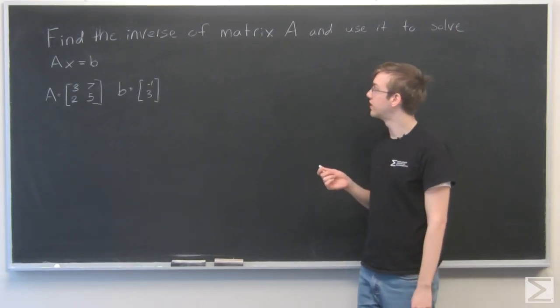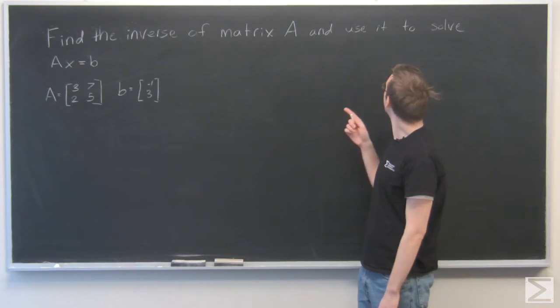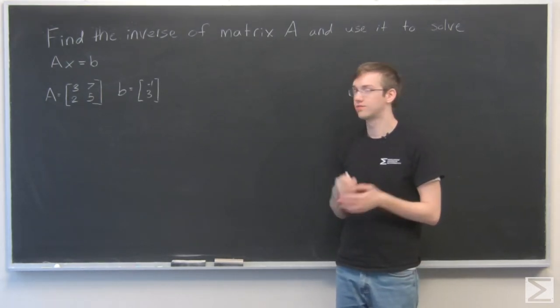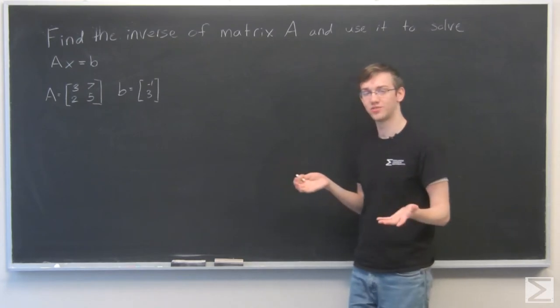So for this problem we need to find the inverse of matrix A and use it to solve the equation Ax equals b. So how does the inverse help us solve Ax equals b?